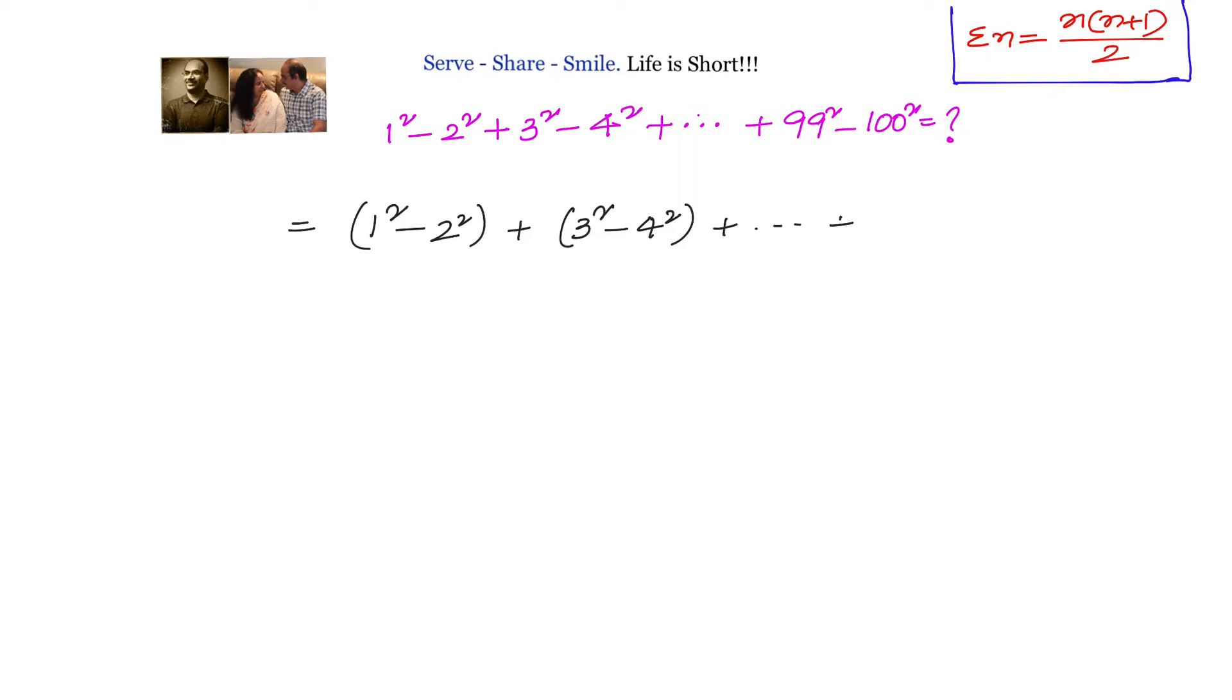Now what we have here, 1 square minus 2 square, is in the form of a square minus b square.